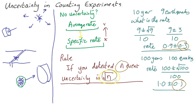So the rule. Whenever you have a counting experiment and you're going to pick up in some interval n events, the uncertainty is root n.